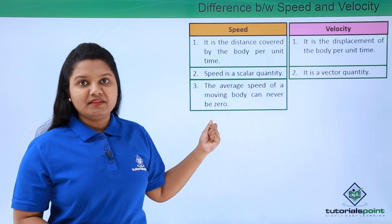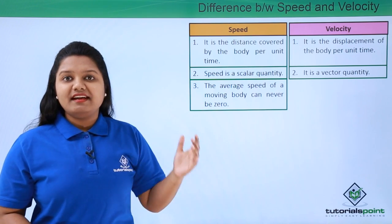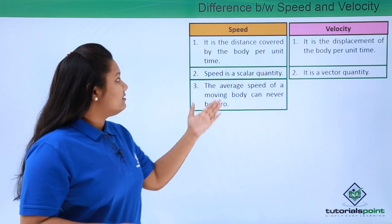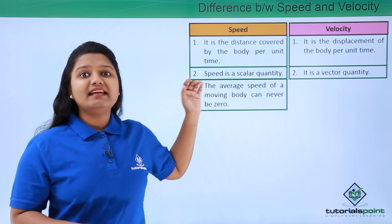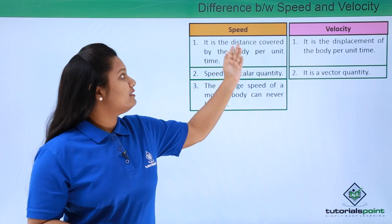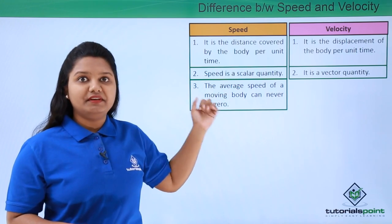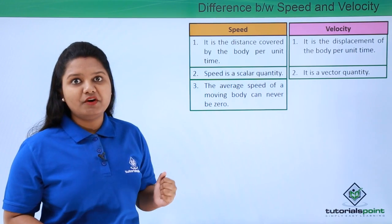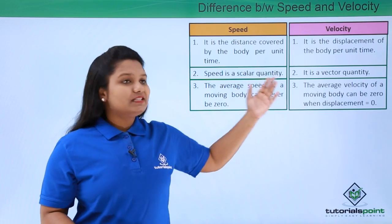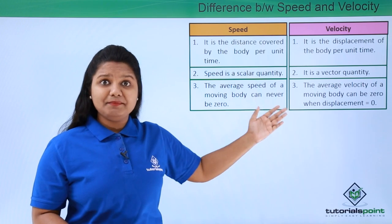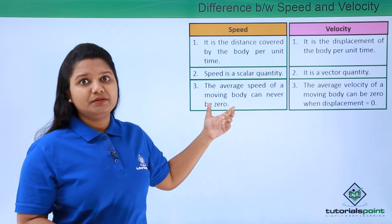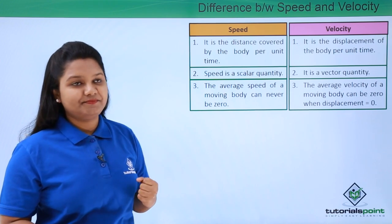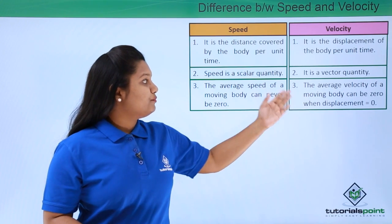The speed of a moving body can never be zero. When a body is moving, it has to cover a certain distance, and thus the average speed of that body can never be zero, since the distance covered can never be zero if it is moving. But in the case of velocity, since we are concerned with displacement, the displacement of a moving body can be zero even if the distance covered is not zero.